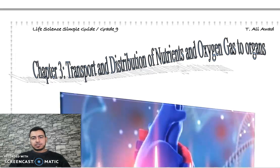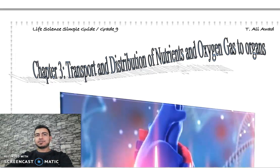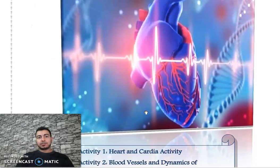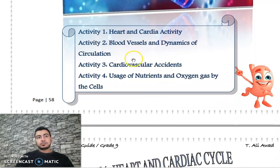Hello dear students, today we are going to start with a new chapter, chapter 3, which is the transport and distribution of nutrients and oxygen gas to organs - نقل وتوزيع الغذاء والأكسجين إلى أعضاء الجسم. We are going to talk about the circulatory system, and we have four activities in this chapter.